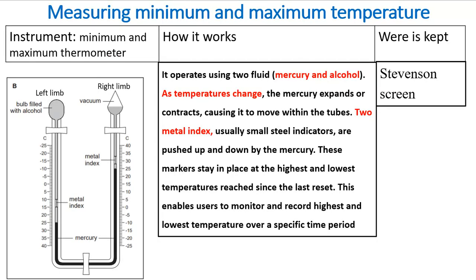Next is the minimum and maximum thermometer, used to measure minimum and maximum temperature. It is also kept inside the Stevenson screen. It operates using two major fluids — alcohol and mercury. These two fluids expand and contract with changes in temperature. As temperature changes, the mercury expands or contracts, causing the needle to move inside the tube.